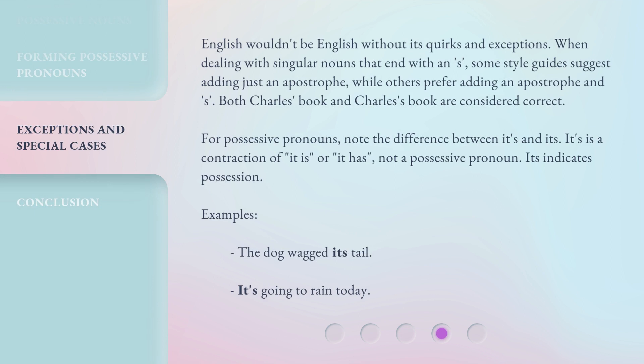English wouldn't be English without its quirks and exceptions. When dealing with singular nouns that end with an S, some style guides suggest adding just an apostrophe, while others prefer adding an apostrophe and S. Both 'Charles' book' and 'Charles's book' are considered correct. For possessive pronouns, note the difference between 'its' and 'it's'. 'It's' is a contraction of 'it is' or 'it has', not a possessive pronoun. 'Its' indicates possession. Examples: The dog wagged its tail. It's going to rain today.